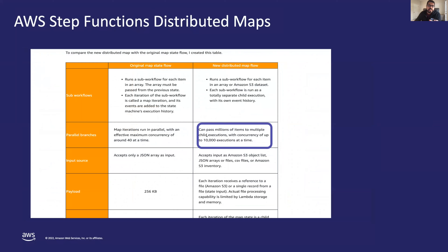AWS Step Functions is growing in popularity in the serverless workflow space. The new distributed map state allows you to write a Step Functions workflow to coordinate large-scale parallel workloads within your serverless application. You can now iterate over millions of objects — such as logs, images, or CSV files stored in Amazon S3 — and the distributed map state can launch up to 10,000 parallel workflows to process that data.